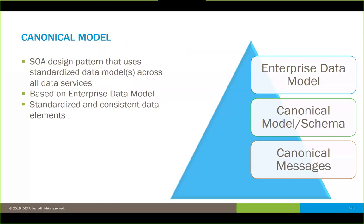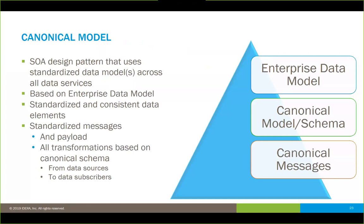Everything in your canonical model is derived from the enterprise model. The way you move data through your organization is done through canonical messages for your data services — packaging up pieces of information where all naming conventions are based on that canonical schema. Your terminology is always exactly the same for that particular information construct. This means standardized and consistent data elements throughout, regardless of which systems are exchanging information. The transformations are all based on the canonical schema: you map from your source to the canonical schema, then from the canonical schema to the recipient or target — what we call subscribers to that information.